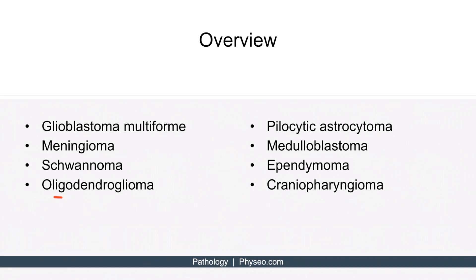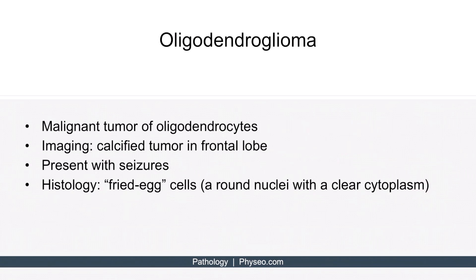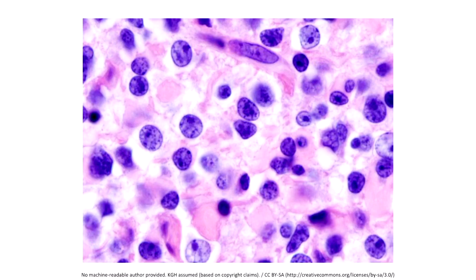Now let's discuss oligodendroglioma. This is a malignant tumor of oligodendrocytes — neuroglial cells that myelinate axons in the central nervous system. On imaging, a calcified tumor in the frontal lobe can be observed. Patients often present with seizures, and a biopsy will reveal characteristic fried egg cells, which have round nuclei with a clear cytoplasm. Here's a histological image showing the characteristic fried egg appearance — notice how these cells are surrounded by perinuclear halos, which give the appearance of fried eggs.